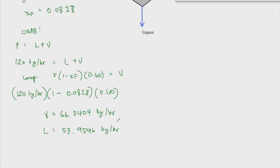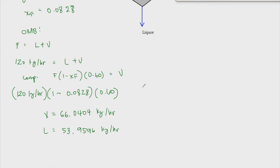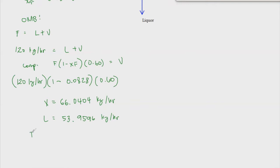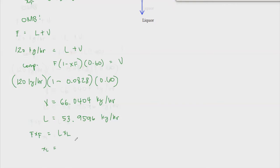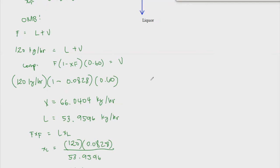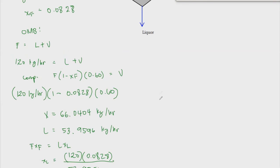To find L, we subtract the vapor from 120, giving liquor L equal to 53.9596 kilograms per hour. To find the liquor composition, we use the component balance: x_L equals (F times x_F) divided by L, which is 120 times 0.0828 divided by 53.9596, giving x_L equal to 0.1841 — so the urea in the liquor is 18.41% by mass.